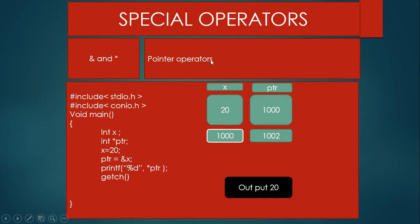Next we discuss the special pointer operators: the ampersand (&) address operator and the star (*) dereference operator. These two operators are used with pointer variables. I am declaring a variable X and a pointer variable: int *ptr. To declare a pointer you write the data type, then a star, then the pointer variable name. In my case the pointer variable name is PTR, and a pointer variable always stores or holds the address of another variable.